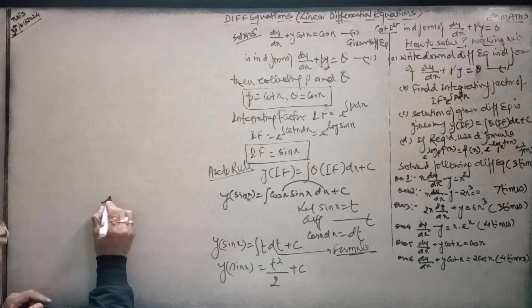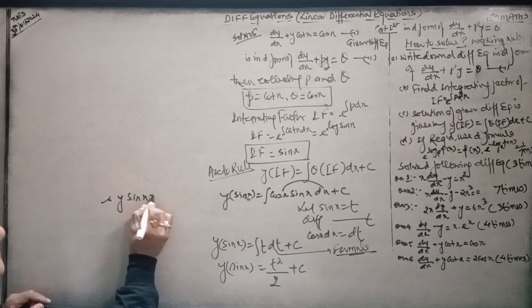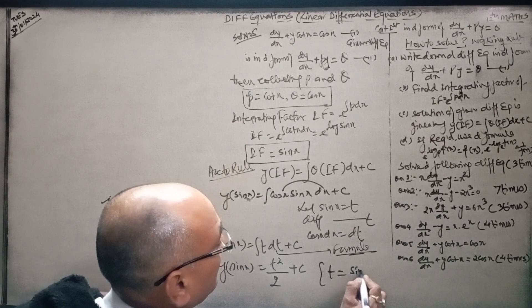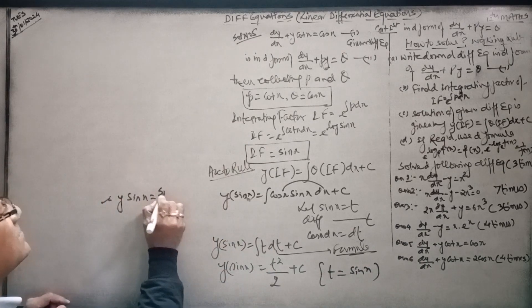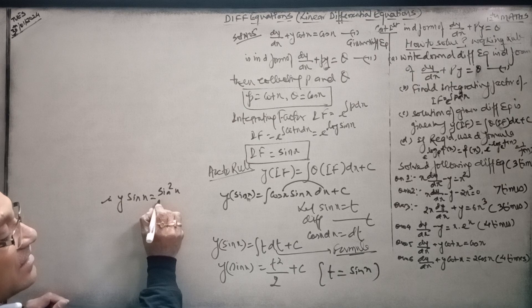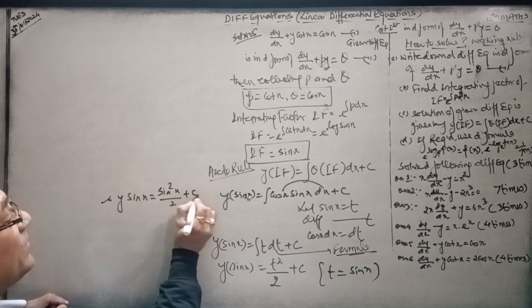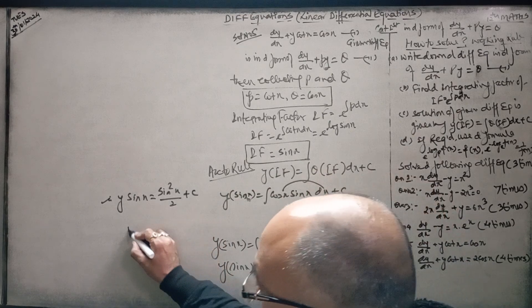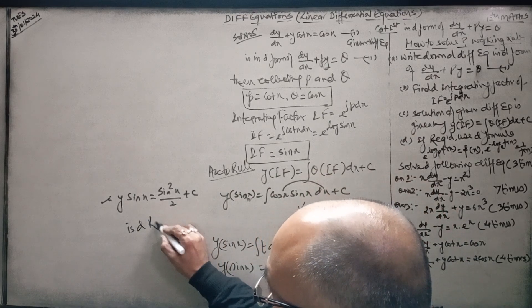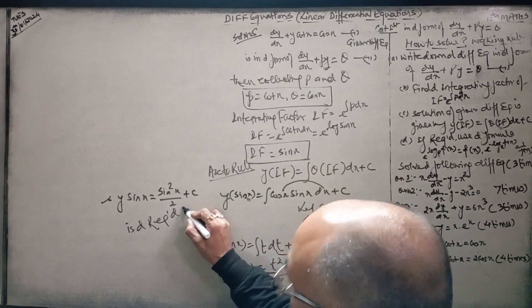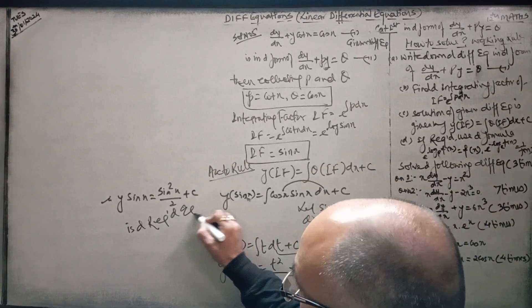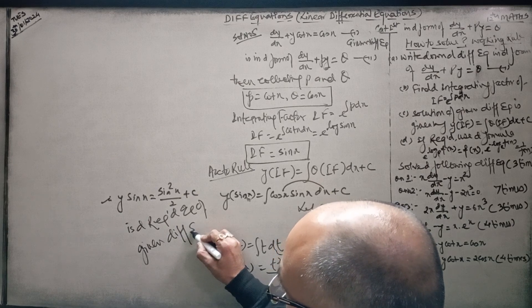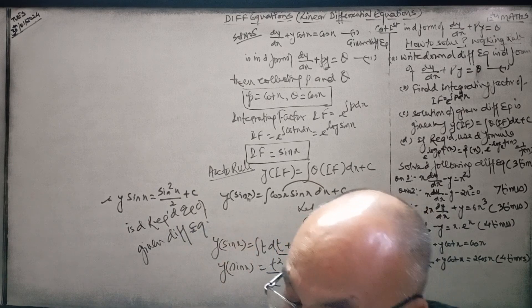Therefore, y sin x equal to, in place of t, you keep it back: sin x, so sin squared x upon 2 plus c. This is the required solution of the given differential equation.